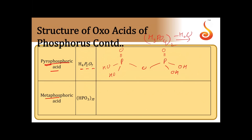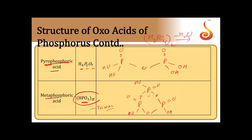Then comes metaphosphoric acid (HPO3)n, which has a cyclic structure. Taking the trimer as an example (n=3), there are three phosphorus atoms each with one P=O bond and one P-OH group, all connected through P-O-P oxygen bridges in a ring. We can also draw tetramers, pentamers, hexamers, and so on. So metaphosphoric acid exists as a cyclic structure of the form (HPO3)n.